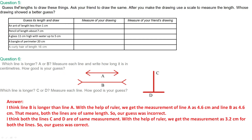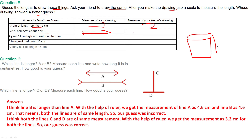Question number 5: Guess the length to draw these things. Ask your friends to draw the same line. After you make the drawing, use a scale to measure the length and see whose drawing showed a better guess. An ant of length less than 1 centimetre — you draw and measure it. A pencil of length 7 centimetre — draw and measure. A glass 11 centimetre high with water up to 5 centimetre — glass height is 11 centimetre, water is 5 centimetre.